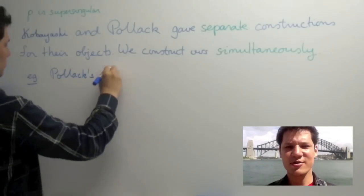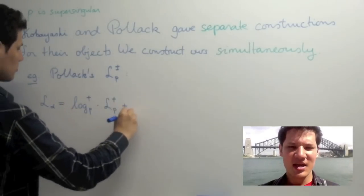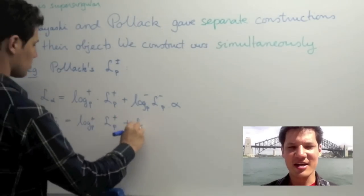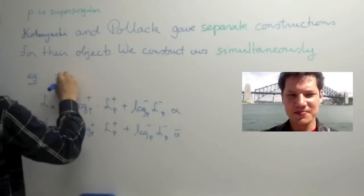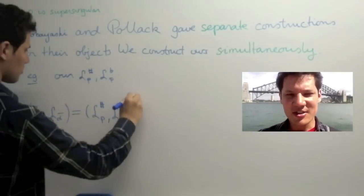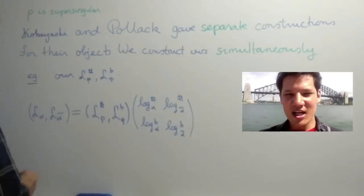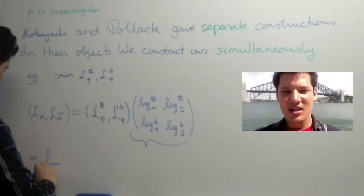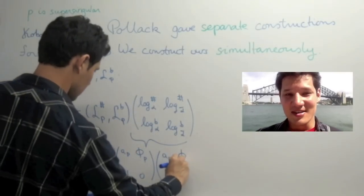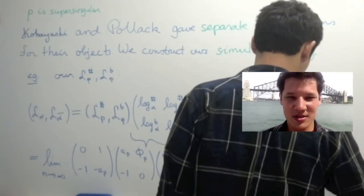We recall that when ap is equal to zero, Robert Pollack's remedy lay in decomposing l-alpha as a linear combination of his lp-plus and lp-minus. There is a corresponding theorem for l-alpha-bar. When generalizing his theorem, we decompose instead the vector l-alpha, l-alpha-bar and rewrite it as a product of the vector lp-sharp, lp-flat times a certain 2x2 matrix whose entries are defined as shown. It's amazing how sometimes linear algebra can come to the rescue.